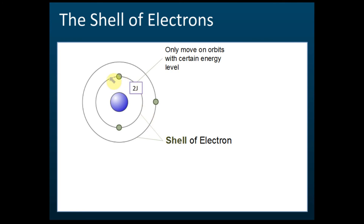Every shell has certain energy levels. For example, the first shell has an energy of two joules and the second shell has an energy of five joules. This is just an example — the actual energy levels are not two joules and five joules, as those values are already considered very high.